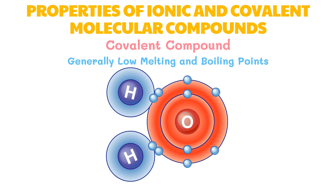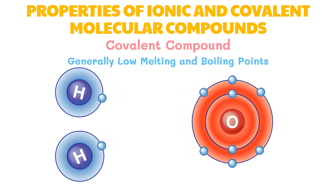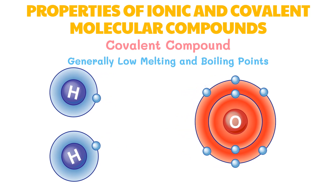The covalent bonds between atoms are quite strong, but the intermolecular forces — the attraction between molecules — can be relatively weak. The addition of a small amount of energy separates these molecules easily, so covalent compounds have low melting and boiling points. Additionally, covalent bonds are relatively flexible and easy to break, which causes molecular compounds to form gases, liquids, and soft solids at room temperature, though there are exceptions when molecular compounds assume crystalline form.